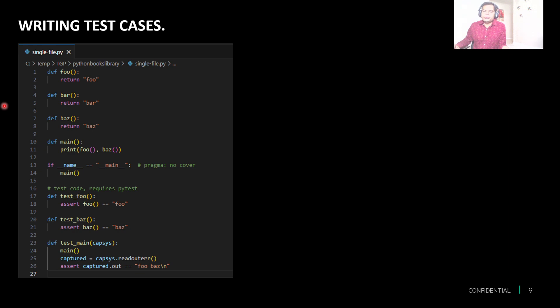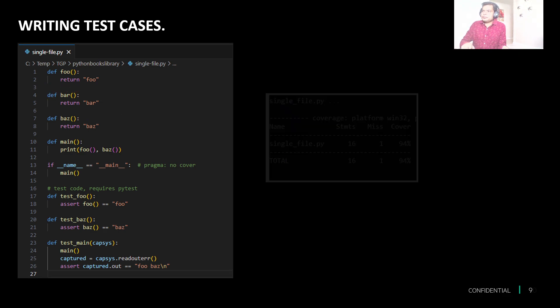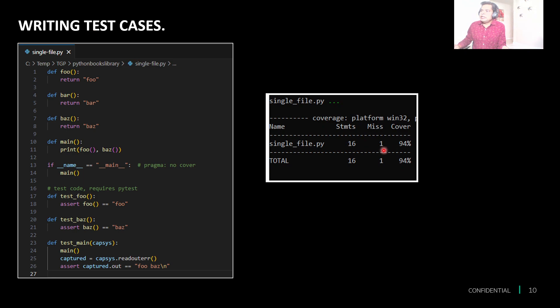Now we look at an example. In the upper section we define foo, bar, badge, and main — this is our application code. Down below are the test cases calling this application. But if you notice, foo is being called, badge is being called, main is being called, but purposely bar is not called. That means test coverage will not be 100% because we've missed one section, and we can see it reports 94% coverage with one line missed.